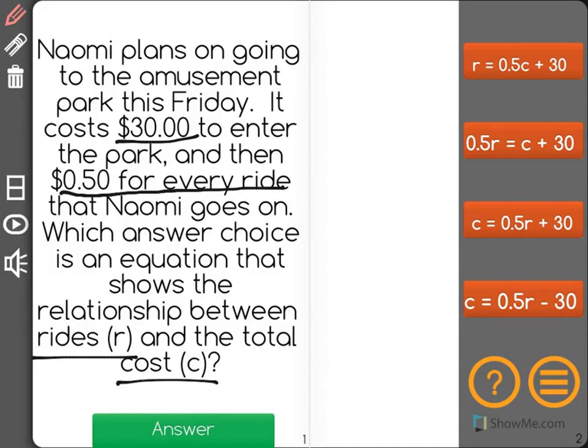So really what we're looking for here is the total cost. The total cost will be represented by C, and what we know, we have to include the $30 that it costs to enter the park.